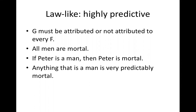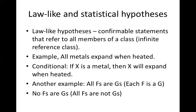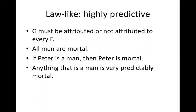Prediction is very important in science, and law-like hypotheses are highly predictive. If you say that all Fs are Gs, then G must be attributed or not attributed to every F. All men are mortal — if Peter is a man, then Peter is mortal. Anything that is a man is very predictably mortal. So if you say that all members of a class possess a certain quality or property, it means that anything you identify as a member of that class must have that property. That's why law-like hypothesis is highly predictive.